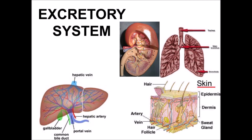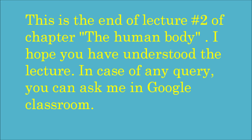The next topic is the excretory system. It is the system through which our body gets rid of waste products. Through the lungs, our body gets rid of carbon dioxide, which is a poisonous gas. Through the kidneys, we get rid of excess minerals and water, which are no longer needed by our body, in the form of urine. Our skin gets rid of sweat. The body gets rid of solid waste, or remains of food that could not be digested, through feces.